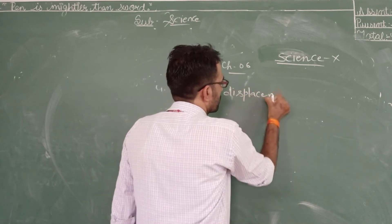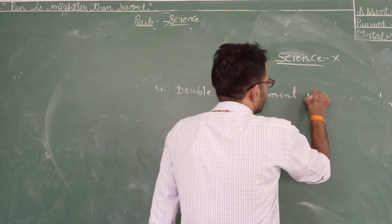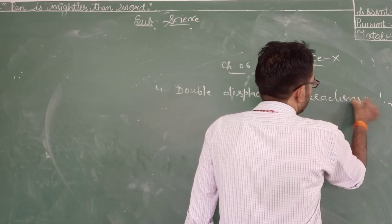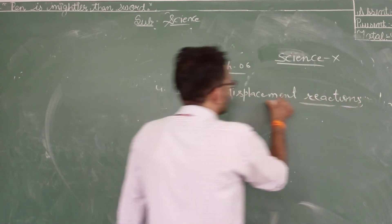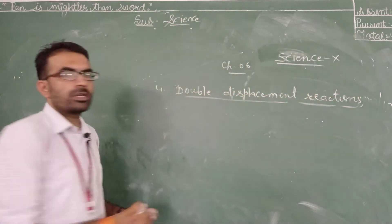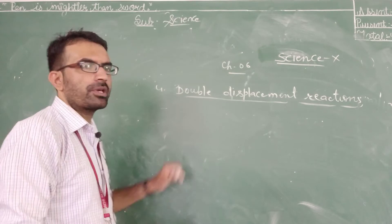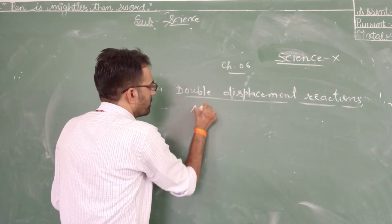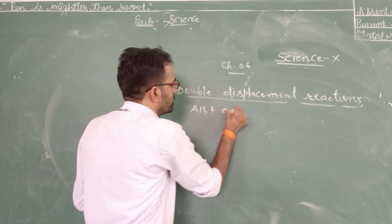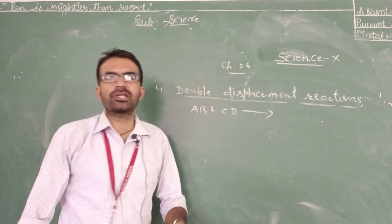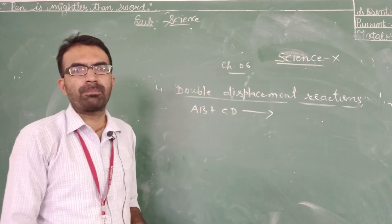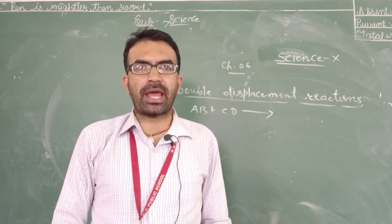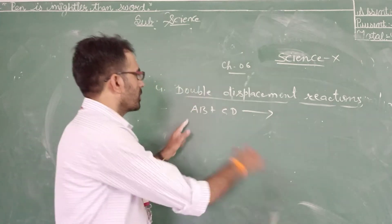Double displacement reactions: those chemical reactions in which two compounds — AB plus CD — react with each other by an exchange of ions or groups are known as double displacement reactions.